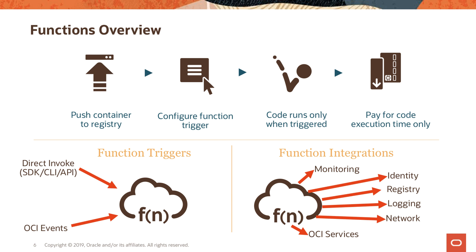You set up a trigger — a trigger could be any kind of event. You can directly invoke a function, set up timers to invoke it, or it can be triggered through the OCI Events service. You can also directly invoke using the HTTP endpoint that each function automatically creates in Oracle Functions. Once the trigger is set up, Oracle Functions will run your code only in response to your trigger, and you only pay for the time your code is actually running. The service integrates nicely in the OCI ecosystem so you get useful metrics with built-in monitoring.